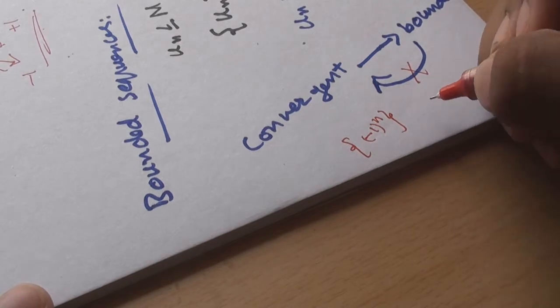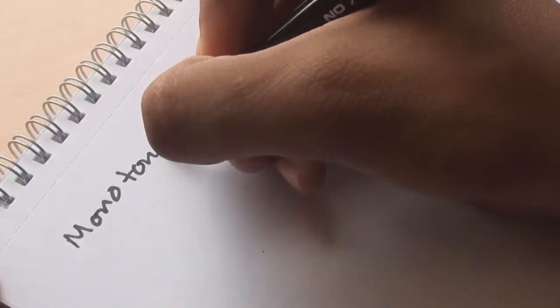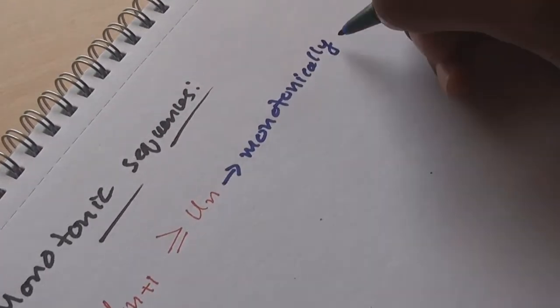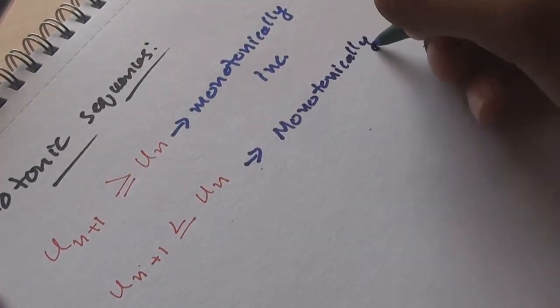Take this sequence for example. It is bounded by negative and positive one, but we know that the sequence is oscillatory. Monotonic sequences: A sequence un where every next term is greater than the previous one is said to be monotonically increasing, and vice versa, monotonically decreasing.